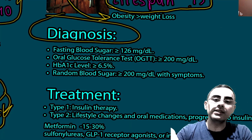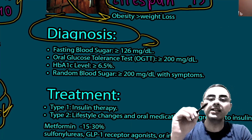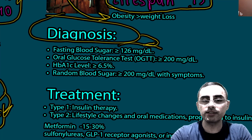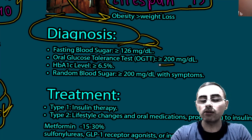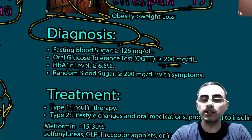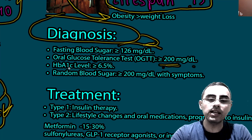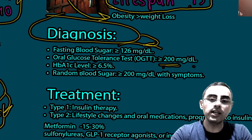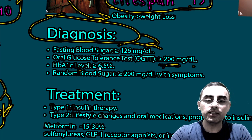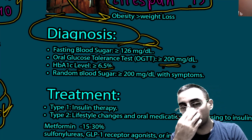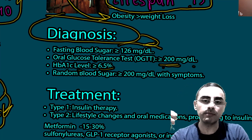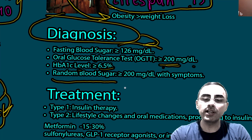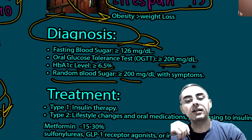For diagnosis: fasting blood sugar level more than 126 milligrams per deciliter; oral glucose tolerance test more than or equal to 200 milligrams per deciliter; HbA1c — glycated hemoglobin — more than or equal to 6.5 percent; and random blood sugar level more than or equal to 200 milligrams per deciliter with symptoms.